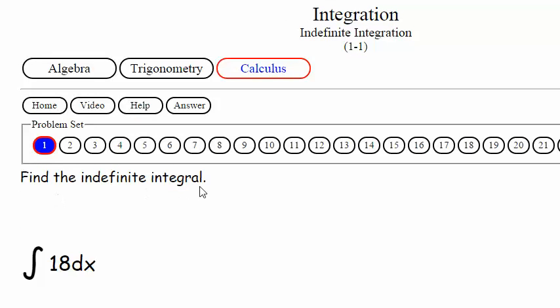It says find the indefinite integral, and of course there's a thing called the definite integral that in the next section we work on, but this one's called indefinite. So we got this thing that looks like an s right here. This is the integral symbol, and it says 18 dx. So let's move over to the whiteboard here. The integral of 18 dx. So what in the world is this?